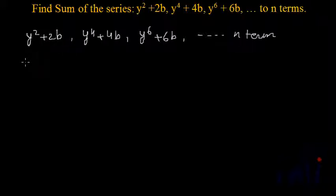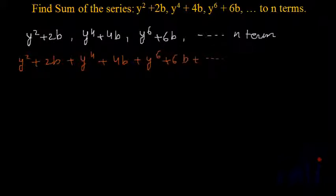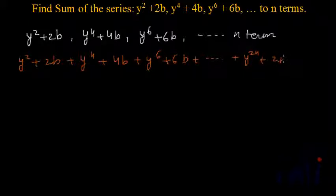Let's write what we have to find. We have to find the sum of this pattern, so it will be y squared plus 2b, plus y to the power 4 plus 4b, plus y to the power 6 plus 6b. The nth term, if we continue like this, will be y to the power 2n plus 2nb.